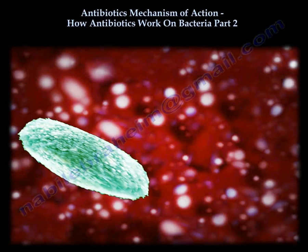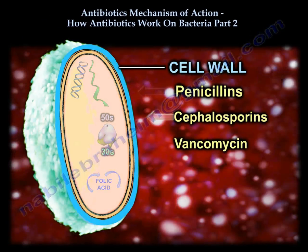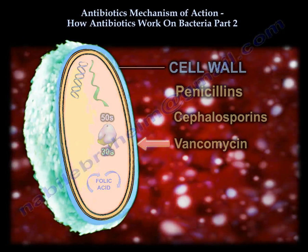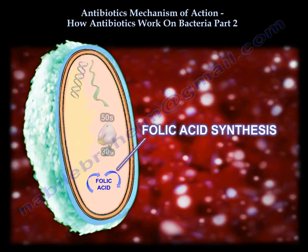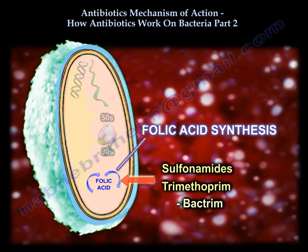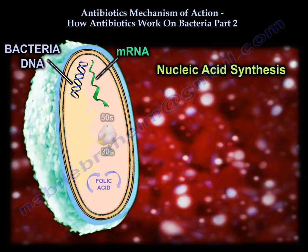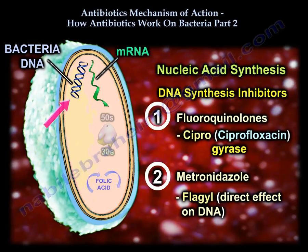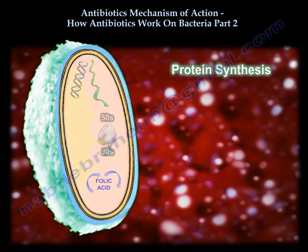Antibiotics: mechanism of action and general overview. For cell wall inhibitors, you have penicillin, cephalosporin, and vancomycin. For cell membrane, you have polymyxin. For folic acid synthesis, you have sulfa and bactrim. For nucleic acid synthesis, you have DNA gyrase inhibitors like fluoroquinolones and cipro, metronidazole which targets DNA, and RNA polymerase inhibitors like rifampin.